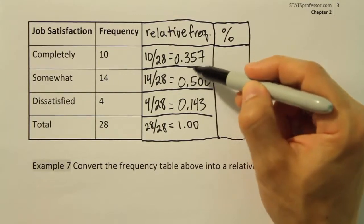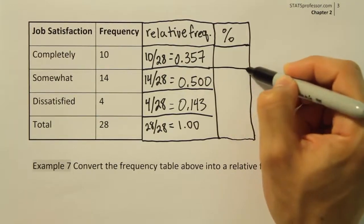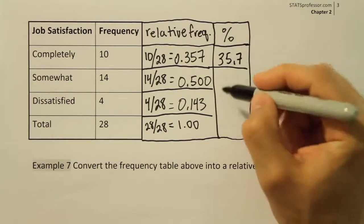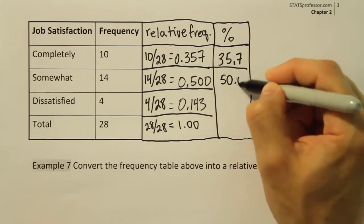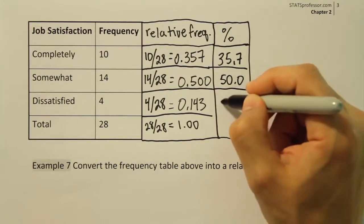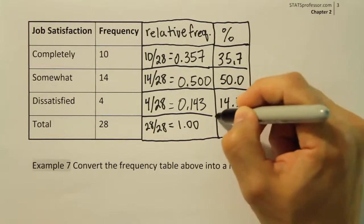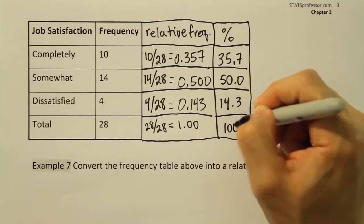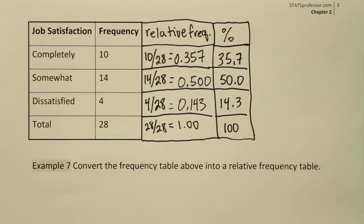That's the same as moving the decimal point over two places. If you do that, you get 35.7%, 50.0%, and 14.3%. And of course, that will add up to 100%. And there you have it.